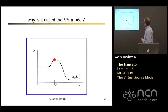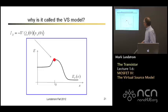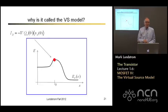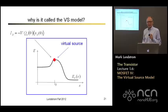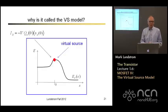I might just mention why this is called the virtual source. It's based on this idea of barrier control — evaluating the current at the top of the barrier. The top of the barrier is a place where the charge is given by standard MOS electrostatics by a very simple expression: the charge is C(Vg minus Vt). That point where the charge is always maintained at that very simple value is called the virtual source, and that's where we evaluate the current and do all of our bookkeeping.